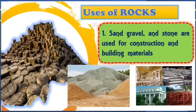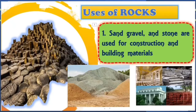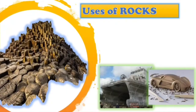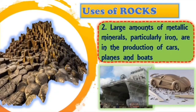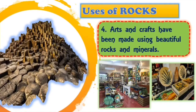Let's now proceed to the uses of rocks. The first use is that sand, gravel, and stone are used for construction and building materials — used in buildings, homes, museums, hospitals, and many more establishments. Next, large amounts of metallic minerals, particularly iron, are used in the production of cars, planes, and boats. Number three, many structures and some outdoor furniture are made of minerals or rocks, and many things we use every day are made of minerals. Number four, arts and crafts have been made using beautiful rocks and minerals. Those are the uses and importance of rocks.